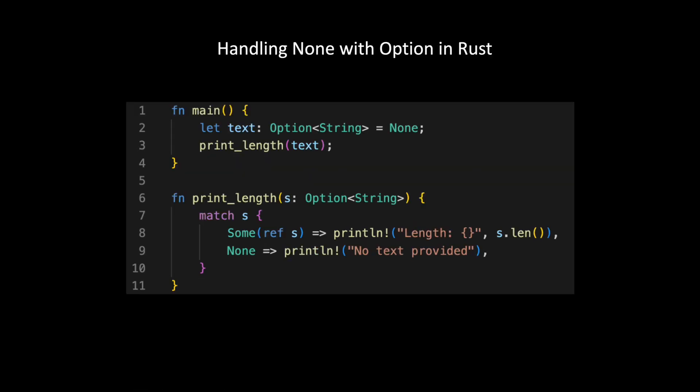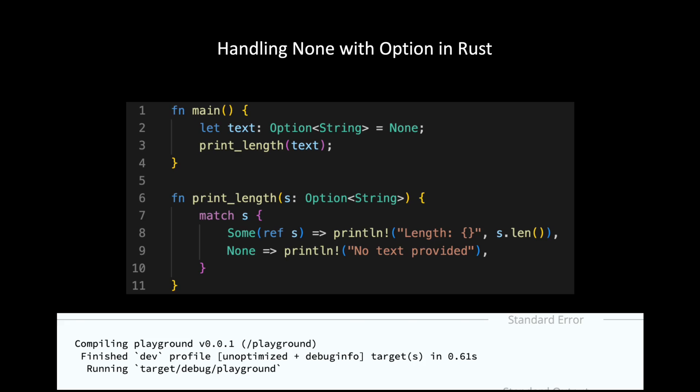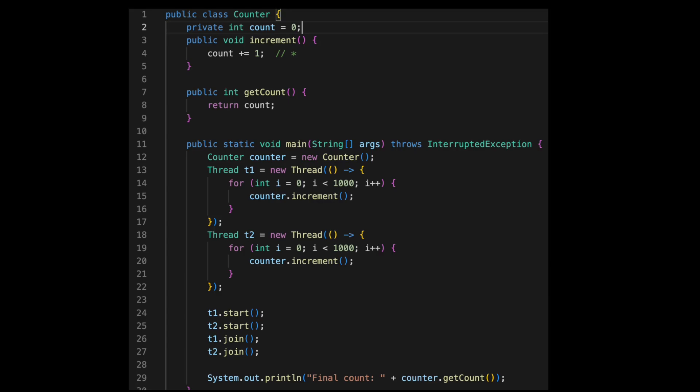If you port the same code to Rust, Rust handles it for us. In Rust, we don't have null — we have None instead. When dealing with a String that could be absent, Rust forces you to use the Option type, which has two conditions: Some (a value exists) or None (nothing). It also forces you to use 'match' to handle both conditions. Even without a security background, by following Rust's built-in system, your code is always ready for the null condition without crashes.